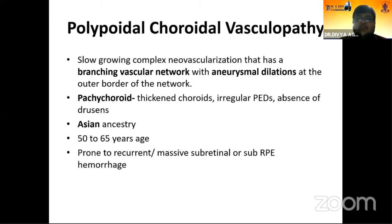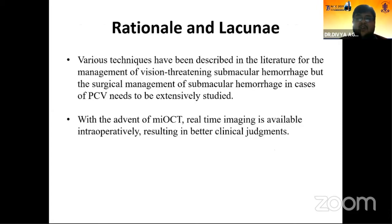In polypoid choroidal vasculopathy, it is a slow-growing BVN complex with aneurysmal dilatations. As Asian populations, we are more prone to PCV compared to AMD, and these are also more prone to have massive, recurrent, sub-RPE and subretinal hemorrhages. Various techniques have been described in the literature for the management of vision-threatening submacular hemorrhage, but surgical management of PCV-related submacular hemorrhage needs to be extensively studied.